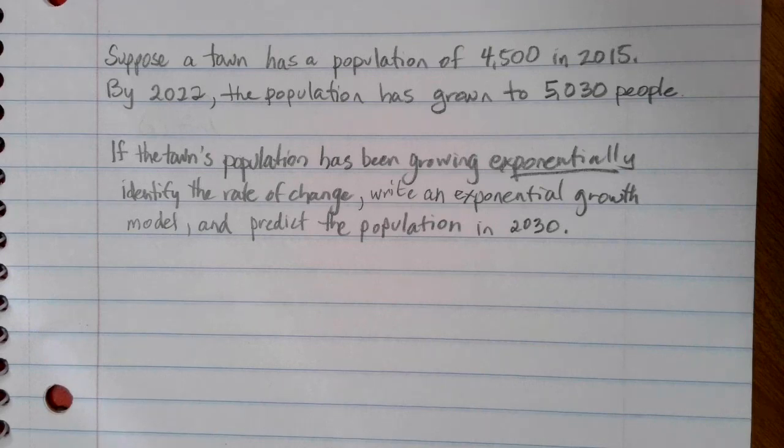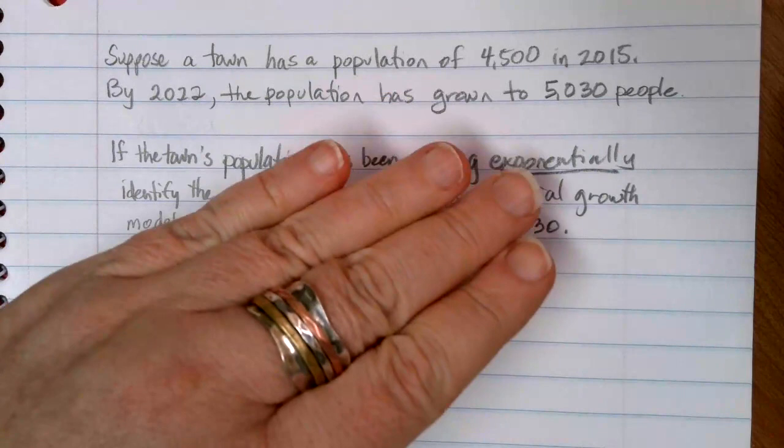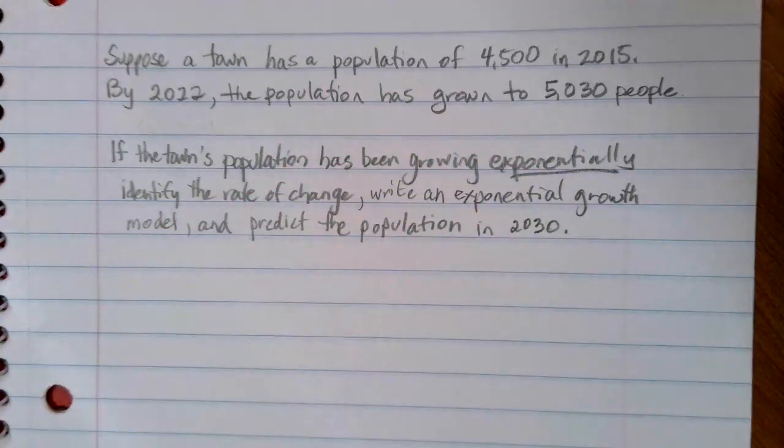Suppose a town has a population of 4,500 in 2015. By 2022, the population has grown to 5,030 people. We've got a growth situation here. Initially, just from this information, it could be linear growth or it could be exponential growth.